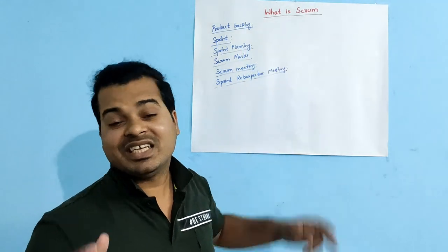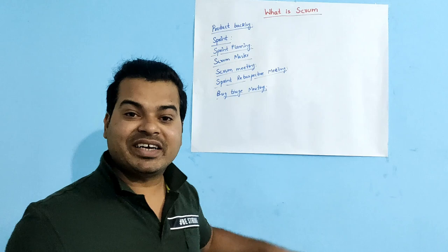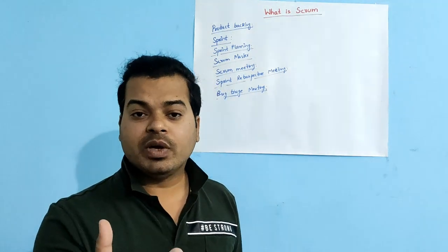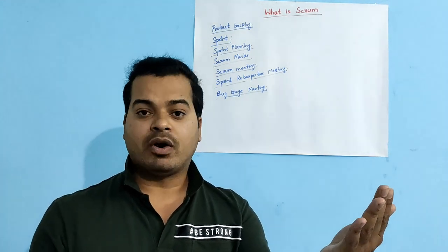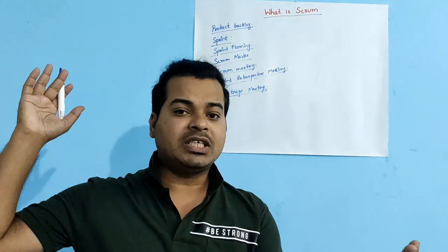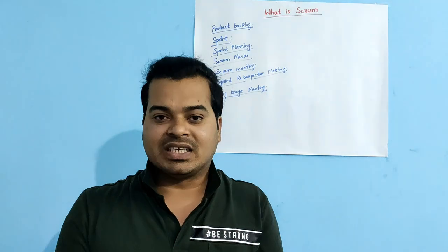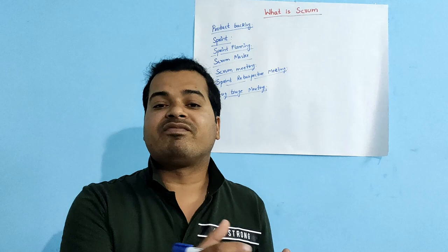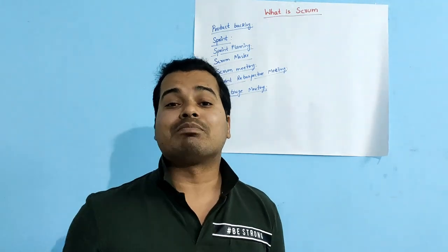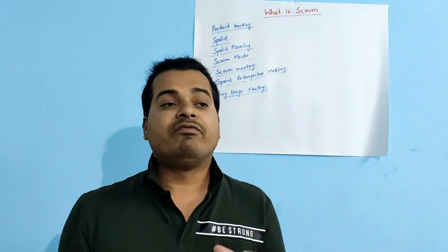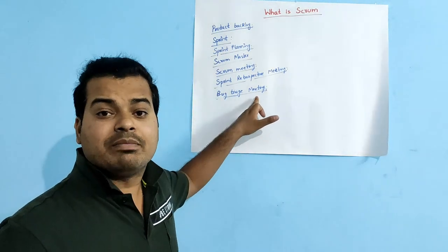The next topic is the Bug Triage Meeting. This is a meeting conducted by the test engineer or product owner, where all developers and test engineers are invited. They compile a list of all open bugs — not just from the current Sprint but from previous Sprints as well — and reprioritize them. They decide which defects should be fixed first and which can be deferred to a later Sprint, based on customer and business impact: critical, major, or minor.